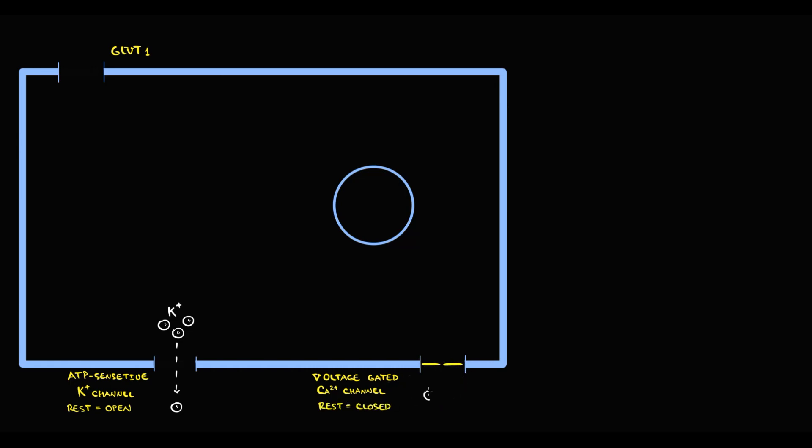So, calcium, which is extracellular ion, in rest state, cannot enter into the cell. Also, beta cells have intracellular vesicles. And intracellular vesicles have already formed insulin and C-peptide.